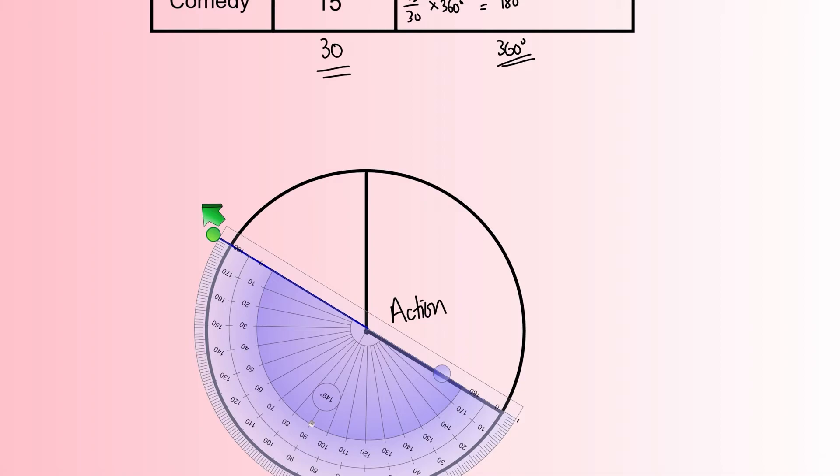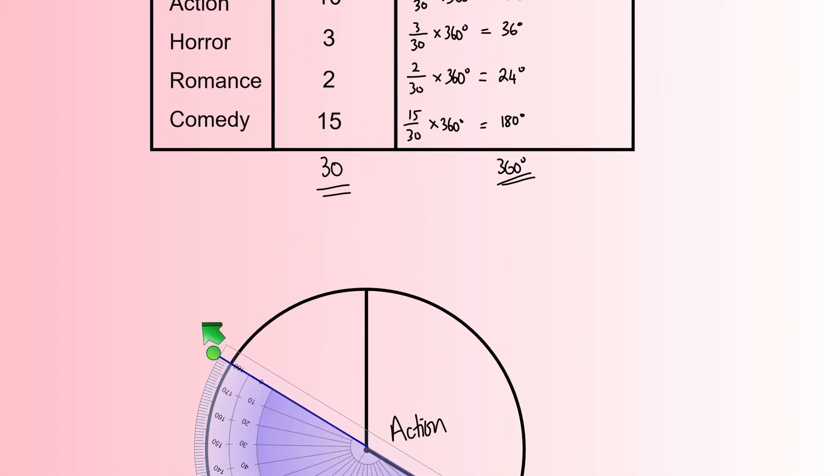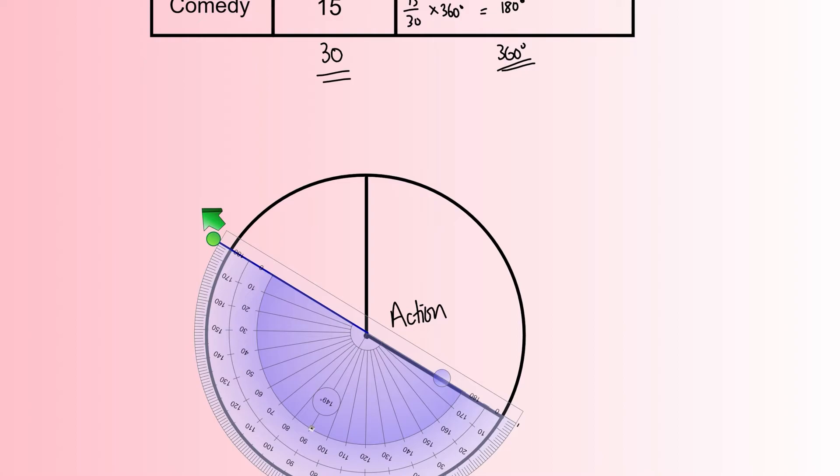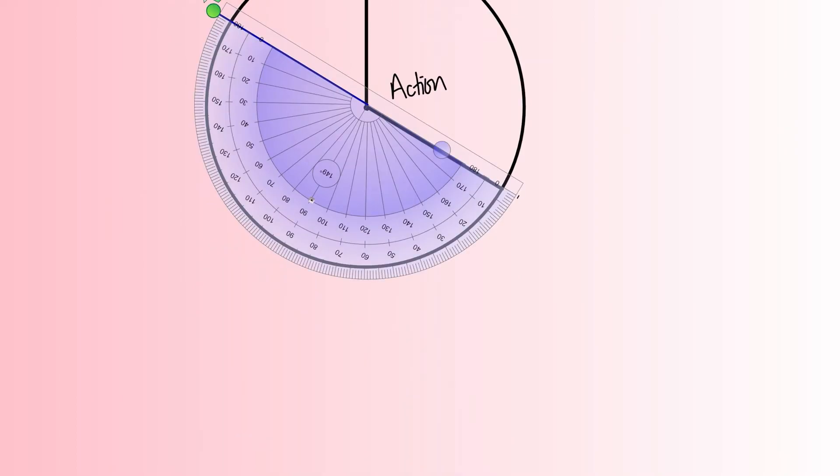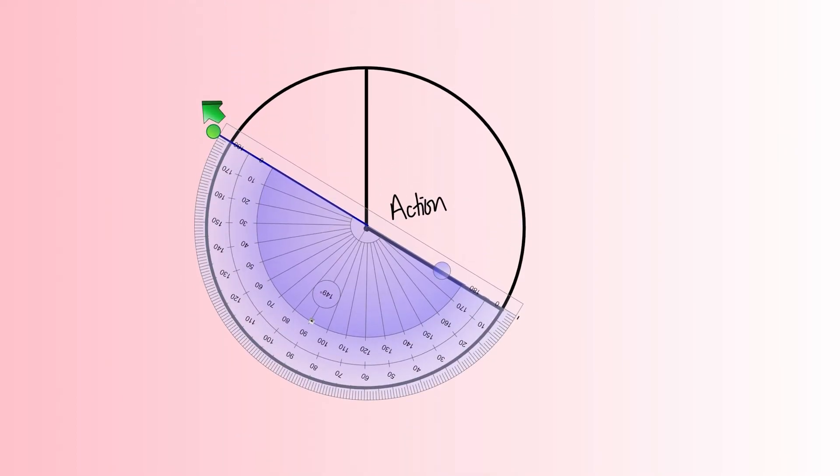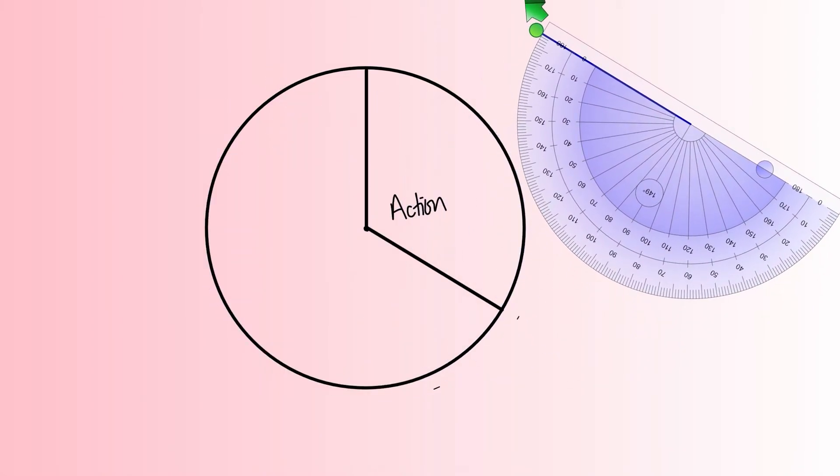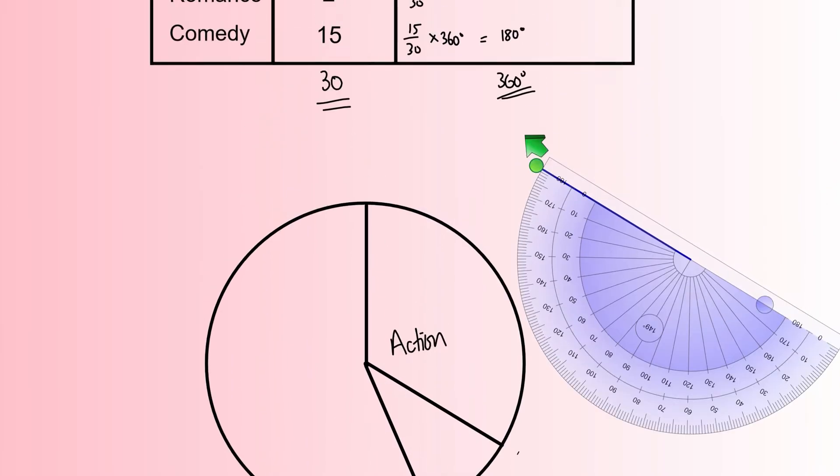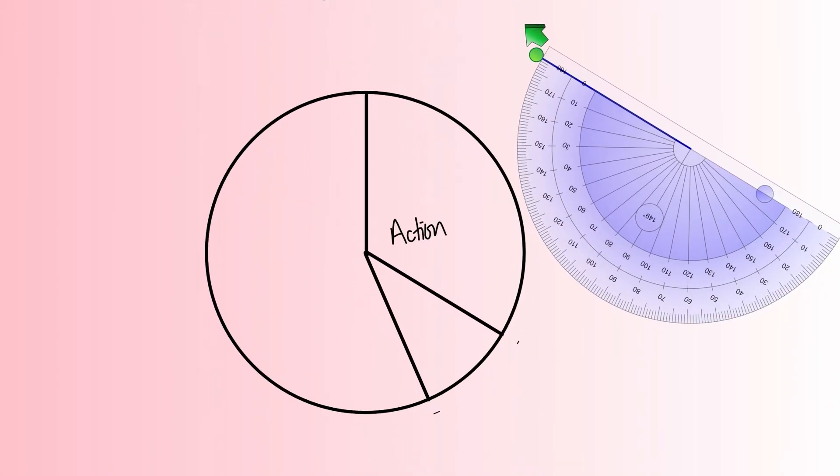We're going to measure around 36 degrees as accurately as possible. Starting from the zero going out to 36, we're going around about to here—36 degrees. Put a little mark again. Then I move my protractor away, and I'm going to use the straight line tool again. That was our section for Horror, so I'll label that as Horror.